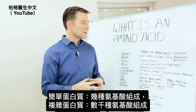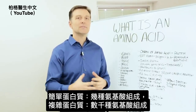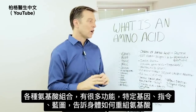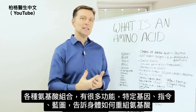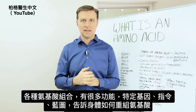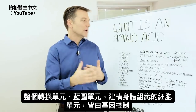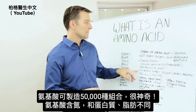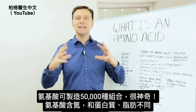You have simple proteins, which are made from several amino acids, and very complex proteins made from thousands of amino acids. It's an interesting combination because you have all these different combinations of amino acids that do certain functions. There are genes, instructions, or blueprints that tell the body how to reassemble these things. Amino acids are needed to make 50,000 different combinations — it's amazing.